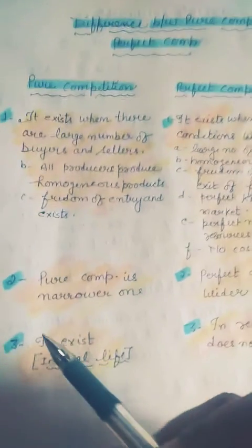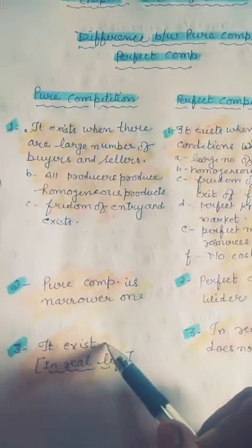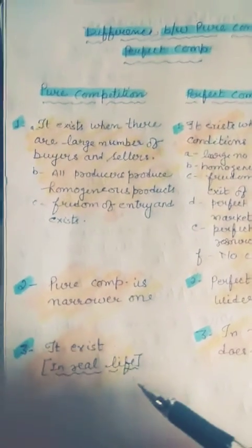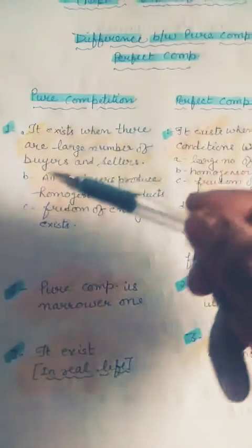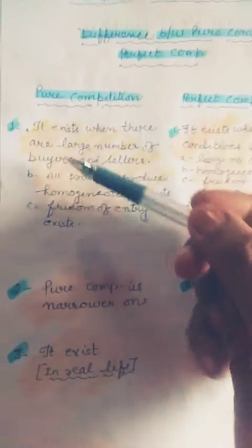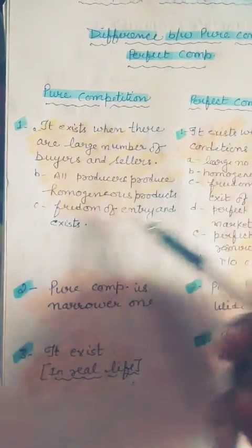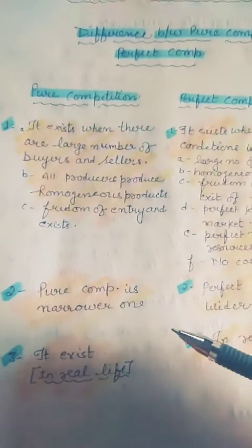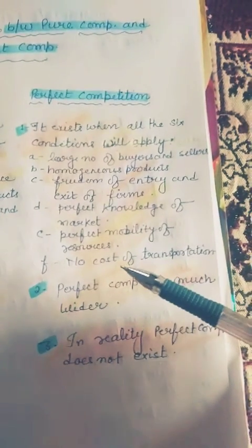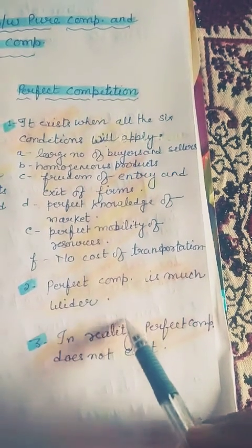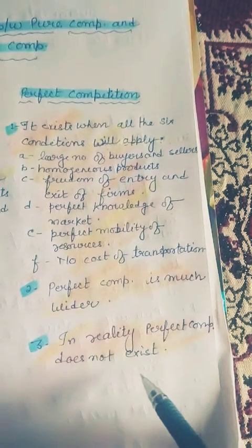The third point: pure competition exists in real life also — we can observe it in our practical life, because only these three conditions are needed, and we can easily see large numbers of buyers and sellers, homogeneous products, and freedom of entry and exit. But in perfect competition, in reality, all six conditions are not applied, so in practical life it doesn't exist.